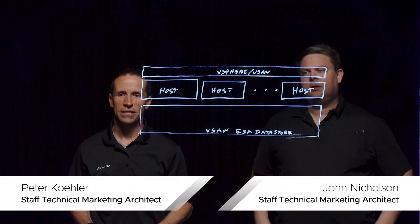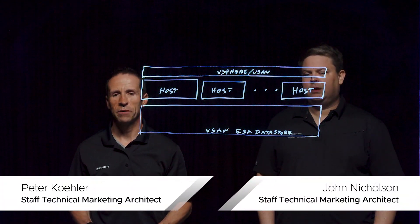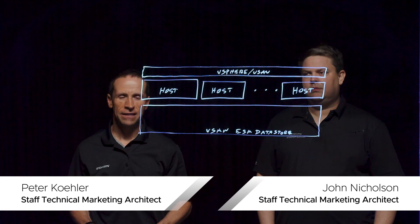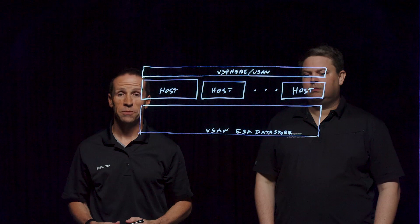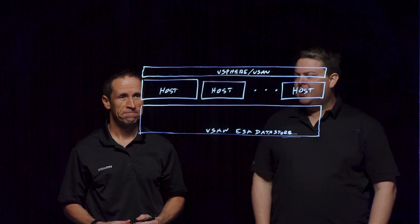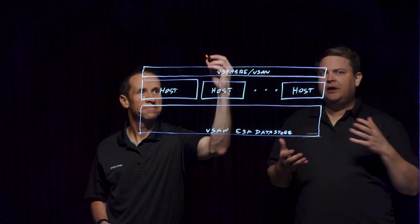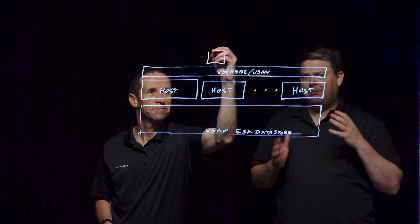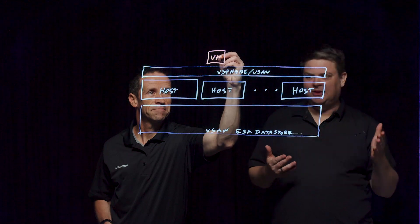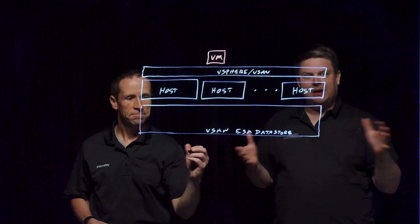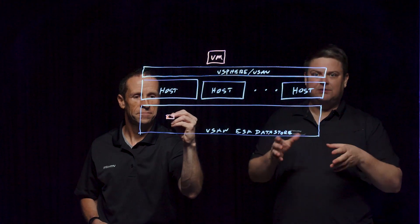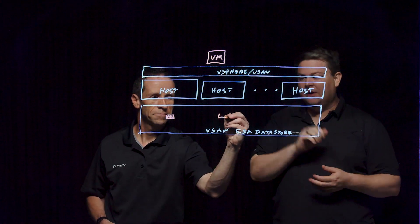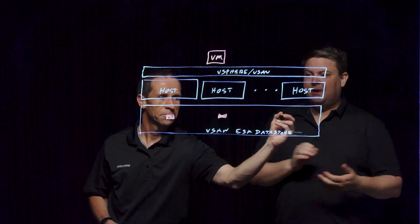Welcome everyone to this Lightboard session where we're going to learn a little bit more about vSAN. In this session, we're going to take a look at the new native scalable snapshots in the Express storage architecture found in vSAN 8. Snapshots are very useful for virtual machines — they can provide a point in time to roll back to. While they are not a backup in and of themselves, they are often used for the creation of backups to create a fixed point from which to copy that data out using our various storage and backup APIs.